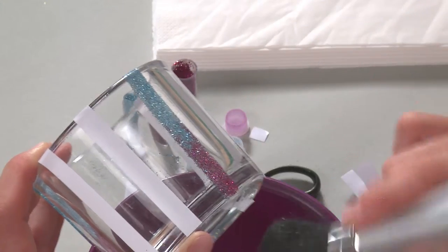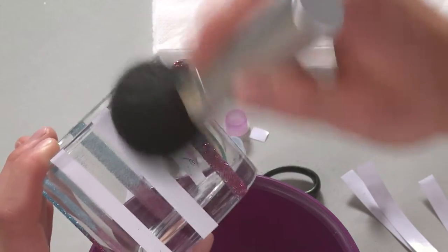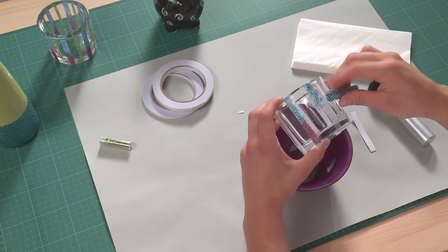Remove the surplus glitter with a brush. Repeat this with the other white strips.